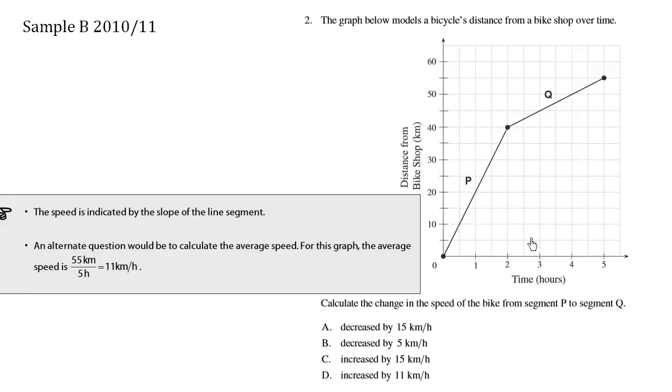The slope of the distance-time graph is the velocity. Here we're increasing, we have a positive velocity, and then we also have a positive velocity here. But this positive velocity is not as steep as this one, so the velocity here is greater than over here.